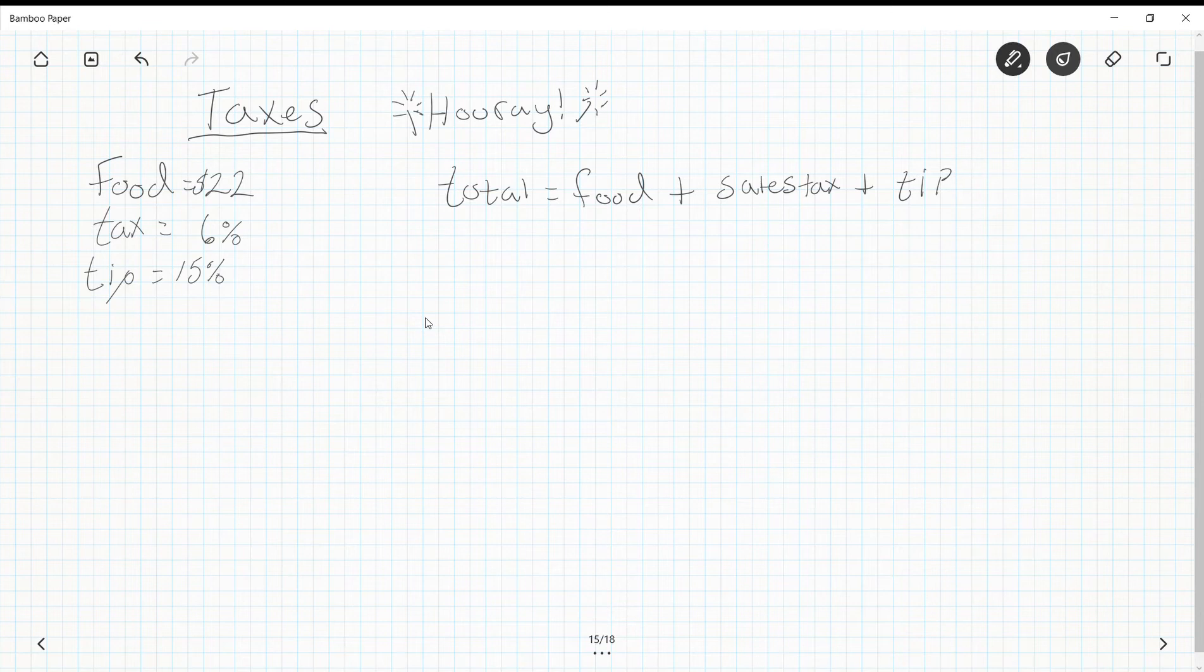If we're talking about like going to a store and buying a TV, it would be the price of the TV then the sales tax and usually no tip involved there. So food is $22 plus sales tax. We're gonna multiply the food or whatever this original amount was times this as a decimal, so it's gonna be 22 times 6% as a decimal is 0.06, plus tip. Again, we're taking the original cost and adding a 15% tip from it: 22 times 0.15.